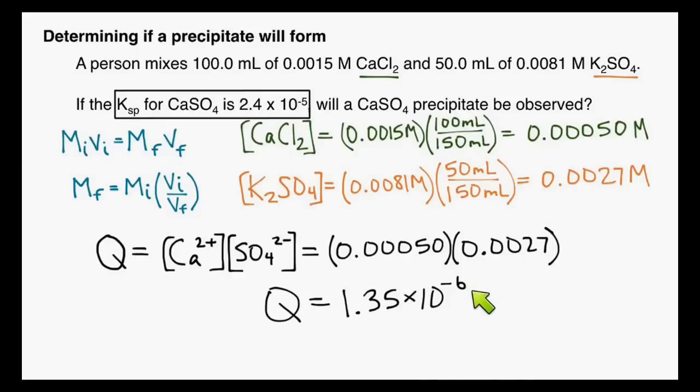Let's compare those values. This is 1.35 times 10 to the negative sixth. This is 2.4 times 10 to the negative fifth. Which one of those is smaller? Well, 10 to the negative sixth is smaller. So our Q in this case is actually smaller than our Ksp value.